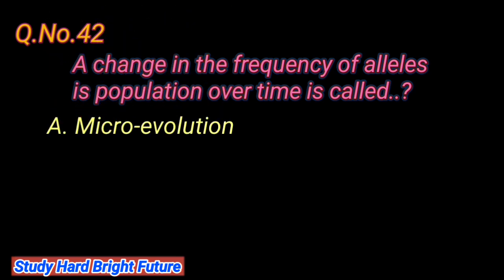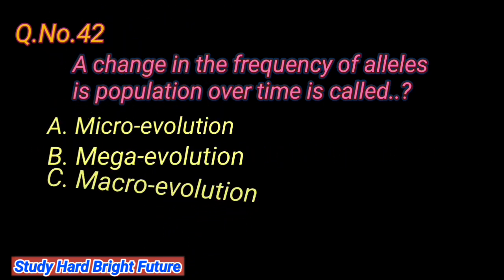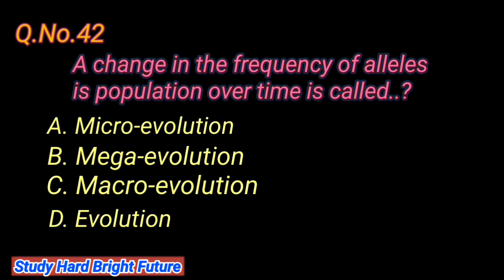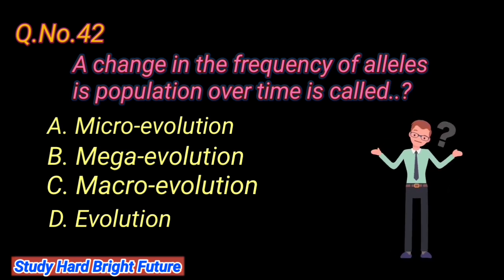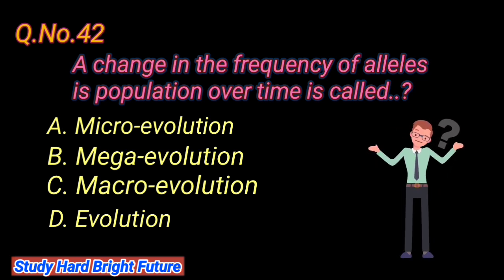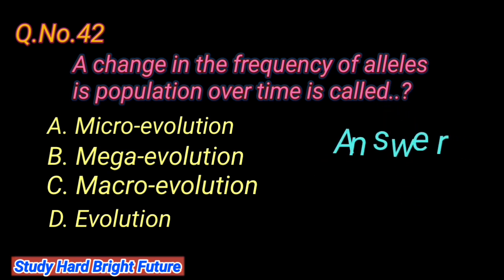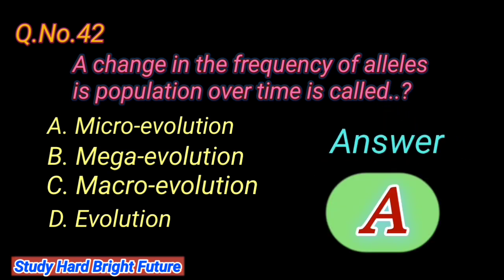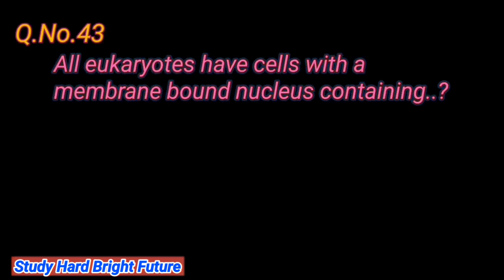Question number 42: A change in the frequency of alleles in a population over time is called. A. Micro evolution, B. Mega evolution, C. Macro evolution, D. Evolution. The right answer is A. Micro evolution.